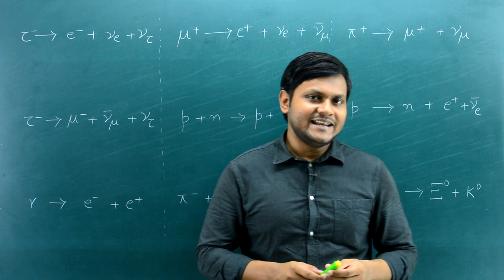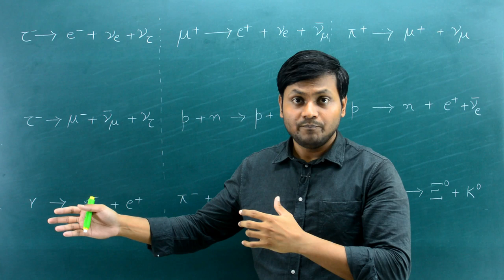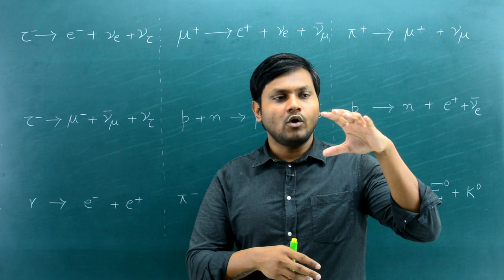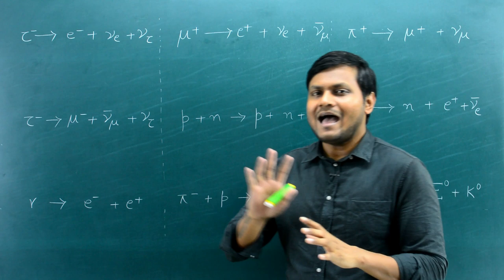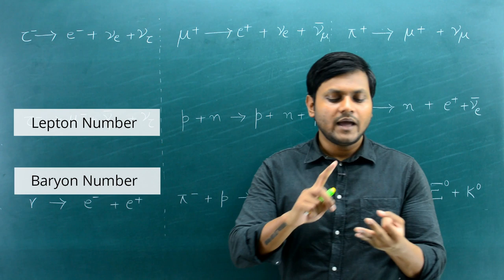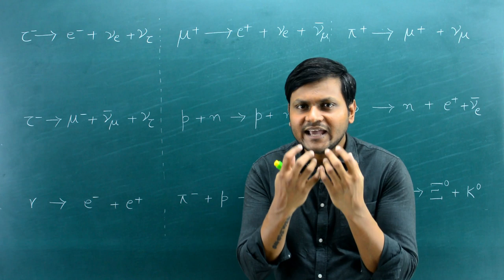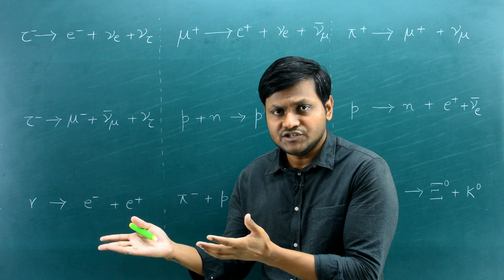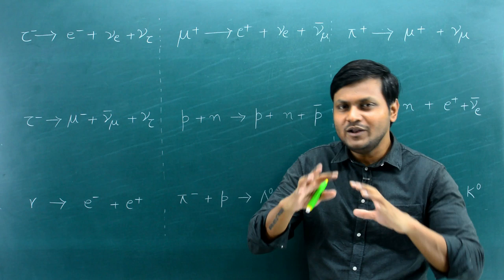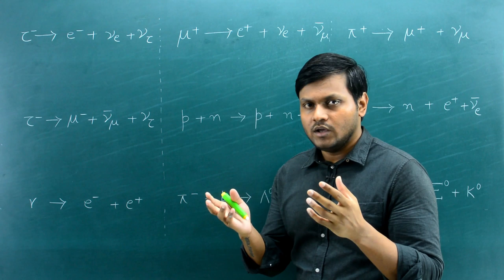We already know about conservation laws like energy, linear momentum, angular momentum, and electric charge. Apart from those, when we talk about interactions of elementary particles, we can associate a certain set of numbers — namely the lepton quantum number, the baryon quantum number, and the strangeness quantum number — which are conserved in certain kinds of interactions. Understanding that gives us an idea about what kinds of particle interactions are allowed in nature and which are not.